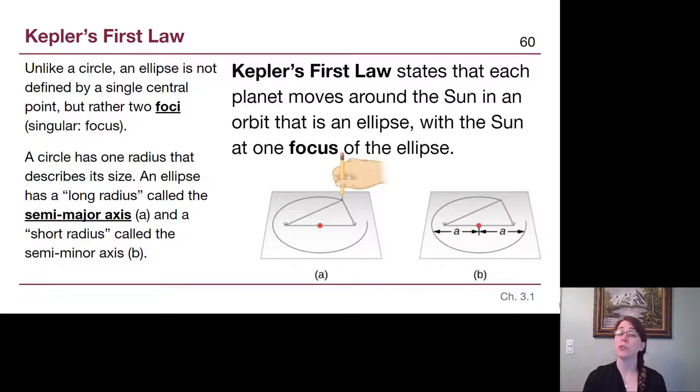Kepler's first law states that each planet moves around the sun in an orbit that is an ellipse with the sun at one focus. We've decided that the planets are ellipse orbits and not circles, and the sun is at one of those two special points and not just anywhere inside that shape.